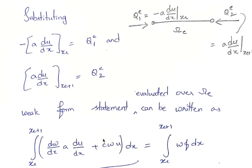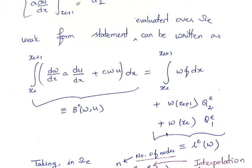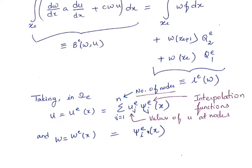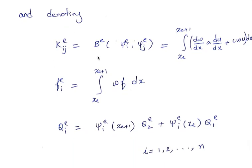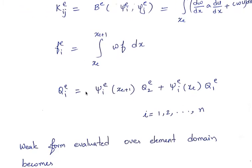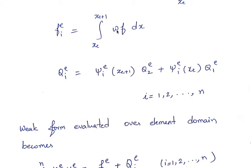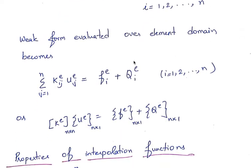By taking minus a du/dx at x_e to be q_{e1} and a du/dx at x_{e+1} to be q_{e2}, the weak form statement is obtained. We then write u^e as summation of u_{ej} psi_{ej} and w as psi_{ei}, where u_{ej} are values of u at nodes and psi_{ej} are the corresponding interpolation functions. After substitution we get the element matrix equation.